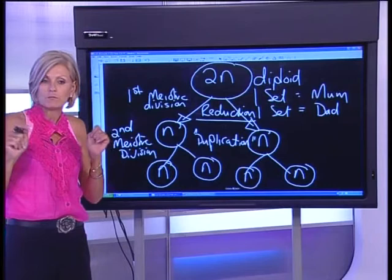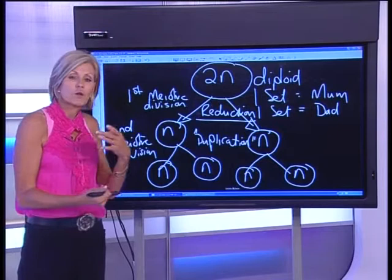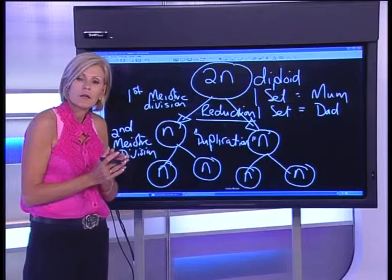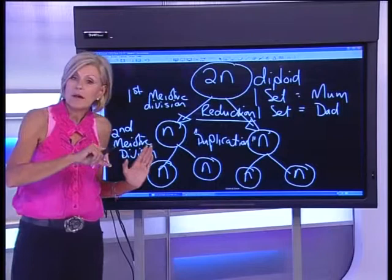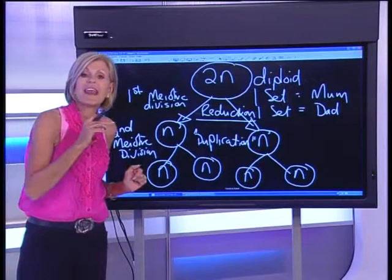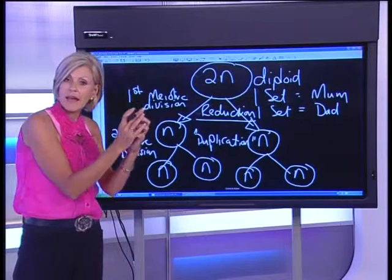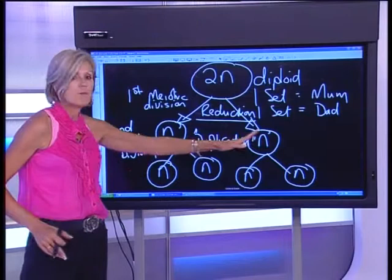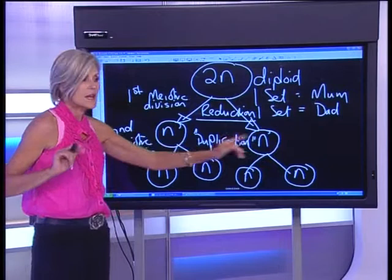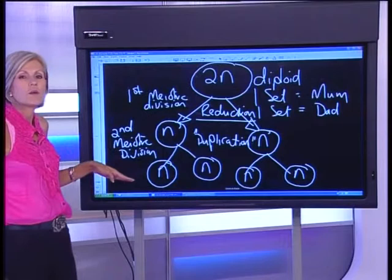Spermatogenesis — 'spermato' means sperm, 'genesis' means creation — is the process of making a sperm cell, and it happens in the testicles. In the female we have oogenesis, because we end up with an egg. So oogenesis is making an egg, and spermatogenesis is making sperm cells, which happens in the ovaries for the female.